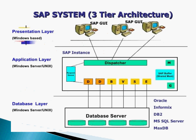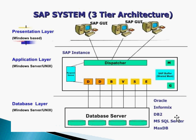In the diagram you can see the Presentation Layer where SAP GUI sits, the Application Layer containing the dispatcher, work processes, message server, gateway, and the enqueue server. The Database Layer is where data is stored. Examples of supported databases include Oracle, DB2, MS SQL, MaxDB, and the latest from SAP — SAP Sybase and SAP HANA, which is currently booming the market.